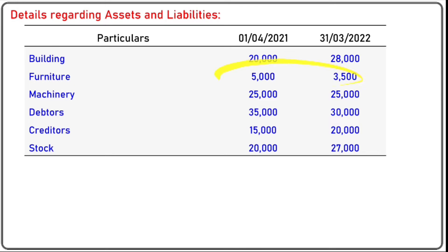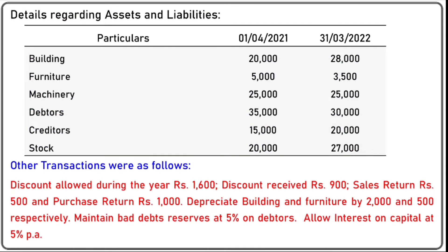For furniture, opening balance is 5,000 and closing balance is 3,500, so there is a decrease of 1,500 — it means there is a sale of furniture. For machinery, there is no change. For debtors and creditors, we will have more information. Other transactions include: discount allowed during the year 1,600; discount received 900; sales return 500; purchase return 1,000. Depreciate building and furniture by 2,500 respectively.